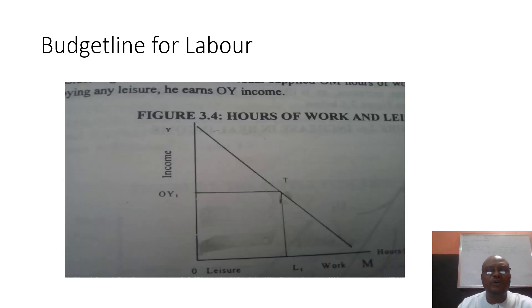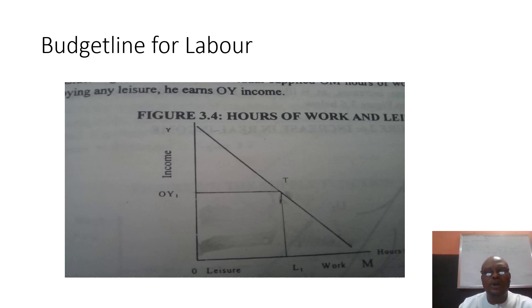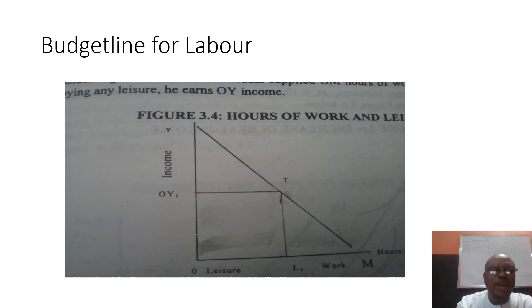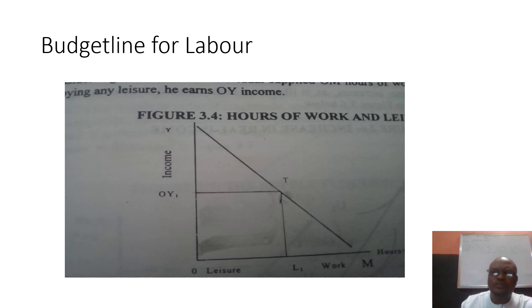Regarding the budget line for labor: the budget line represents two extreme possible points on the wage rate and hour supply map. That is, if you supply OM hours of work as depicted on the diagram, you are going to earn OY wages. If you work for 24 hours, you will tend to earn more wages.